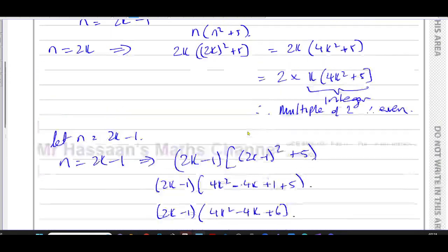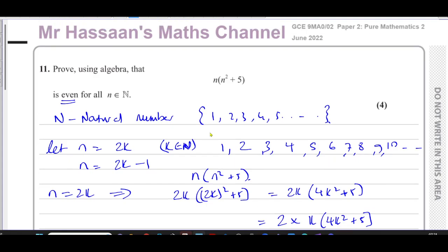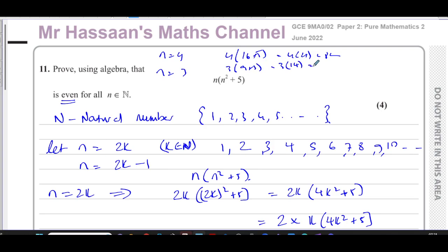What you don't do is take random even and odd numbers, put them into the expression, and think you've proved it. For example, n=4 gives 4 times 21 equals 84 — even. And n=3 gives 3 times 14 equals 42 — even. But you've only proved it for n=4 and n=3, not for every even or odd number that exists. That's not sufficient as a proof for all natural numbers.